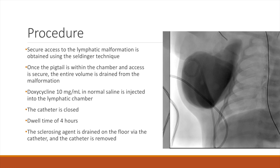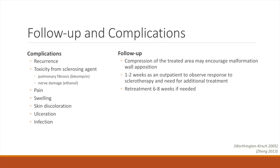After the dwell time is complete, the doxycycline can be drained and the catheters are removed. The most common complication of sclerotherapy is recurrence of the lymphatic malformation. Other complications may be specific to the agent used; for example, bleomycin can rarely cause pulmonary fibrosis and ethanol can cause nerve damage. Additional common complications include pain, swelling, skin discoloration, ulceration, or infection.